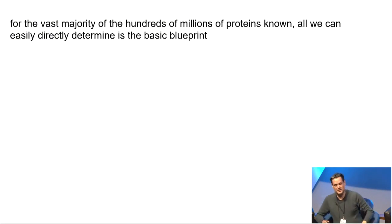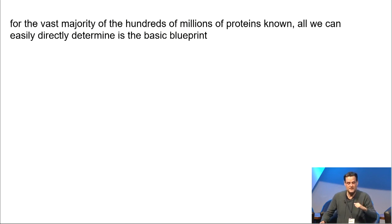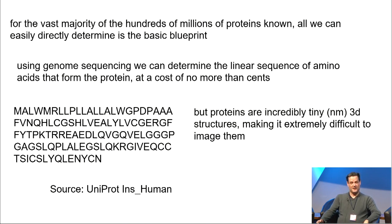For the vast majority of those hundreds of millions of proteins, which I mentioned, all we can easily determine is the basic blueprint. So, that amino acid sequence, we can determine using genome sequencing at a cost of no more than a few cents. In fact, I think probably the average cost now is below a cent.